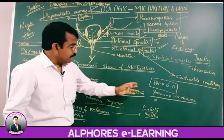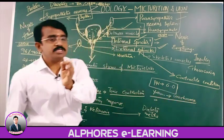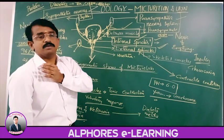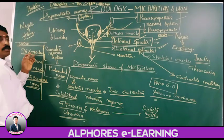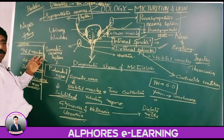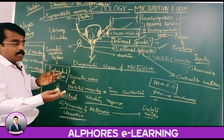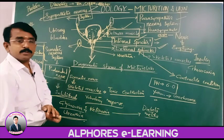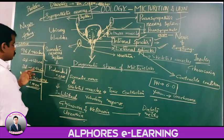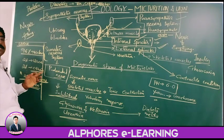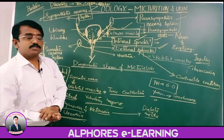Urine composition: with pH 6 it is slightly acidic and yellow in color due to urochrome. Urochrome is a breakdown product of hemoglobin. It is also with 96% water and 2% urea — since the urea content is more, it is ureotelic, and the urine is hypertonic.